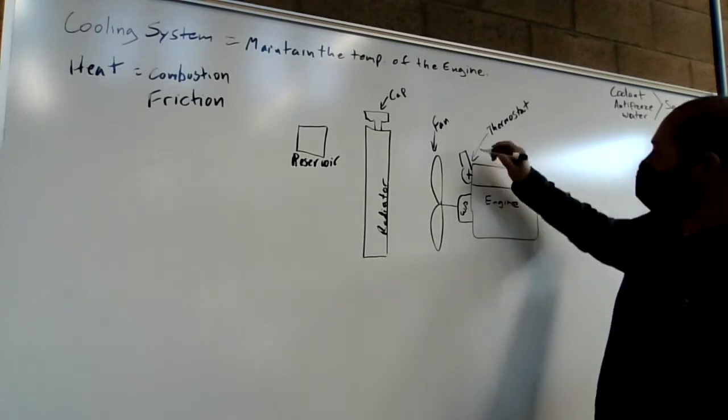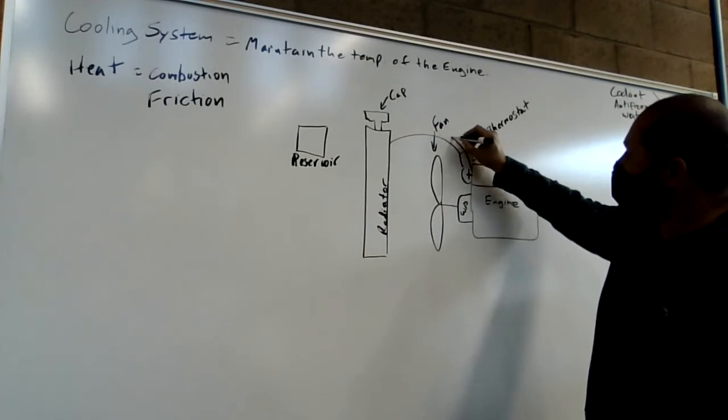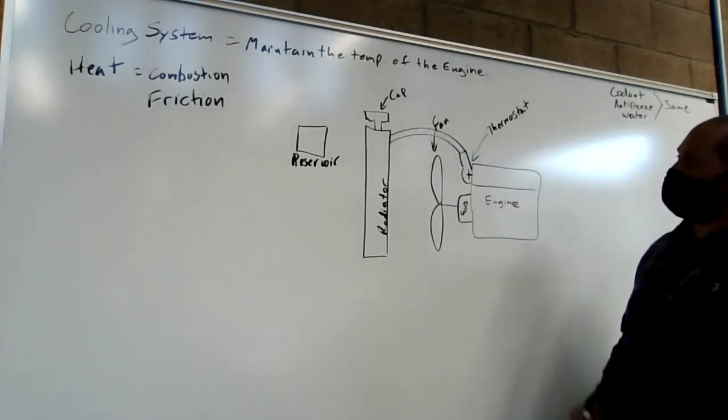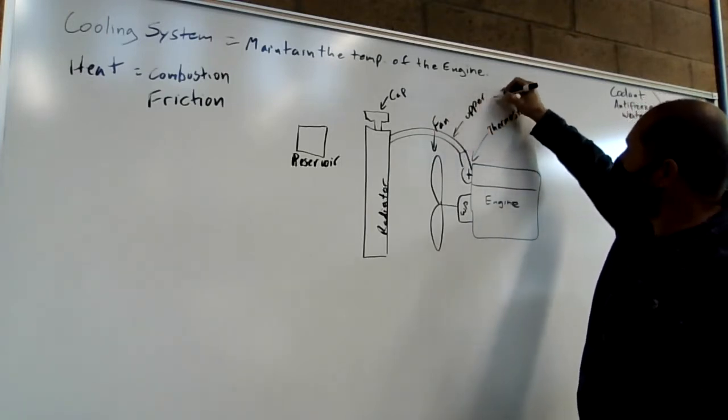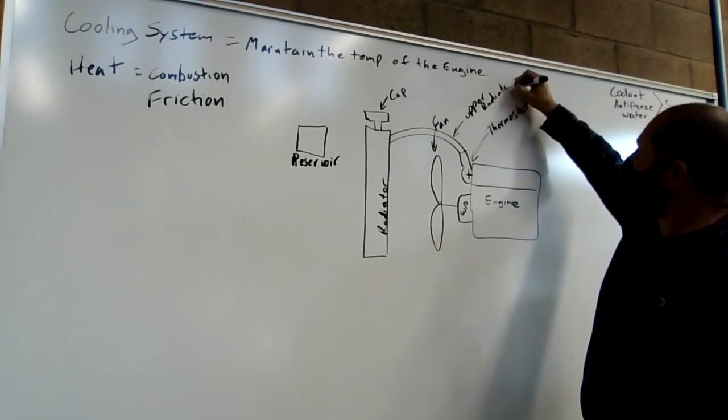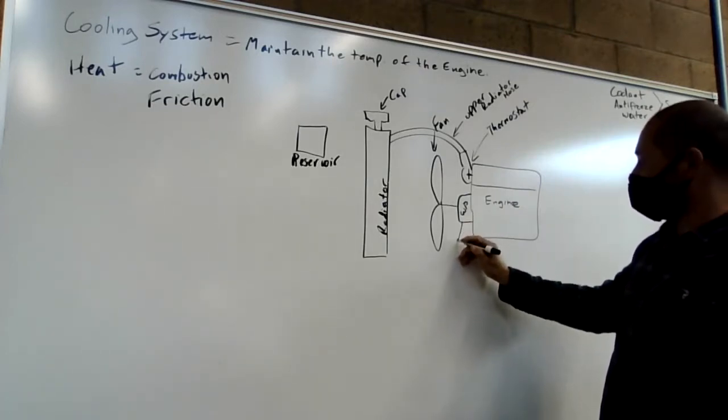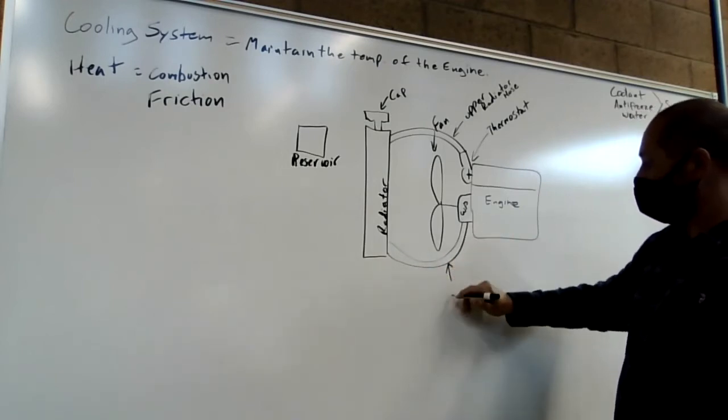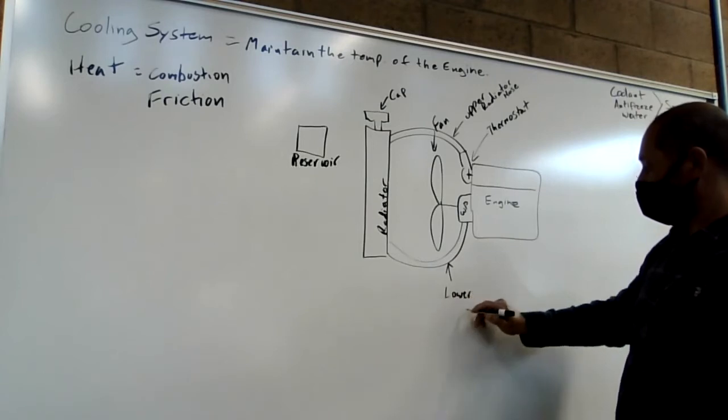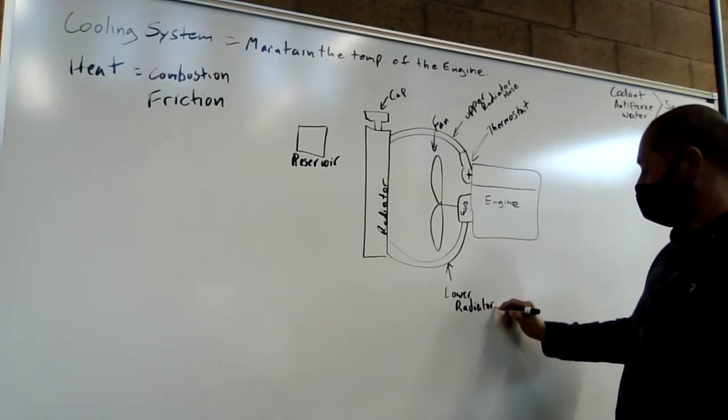Typically, the thermostat has a hose that goes from the thermostat housing to the top of the radiator. This is called your upper radiator hose. And then, the water pump typically has a hose that comes from the bottom, and this is your lower radiator hose.